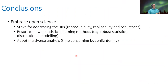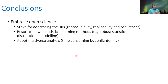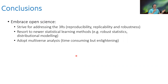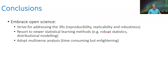The conclusions are: embrace open science; strive for addressing the three R's — reproducibility, replicability, and robustness; resort to newer statistical learning methods, robust statistics, and distributional modeling. There are many options like linear quantile mixed models, quantile regression, and more. And I really recommend adopting multiverse analysis, which forces you to use multiple approaches and report them all. It's time-consuming but highly enlightening.